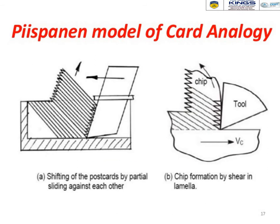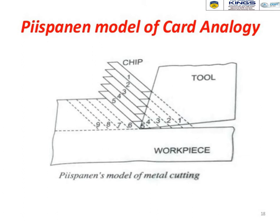The bi-span model of chip formation describes the shifting of chip segments sliding against each other. The chip moves in a direction perpendicular to the tool movement — if the tool moves horizontally, the chip moves vertically. The chip direction is directly perpendicular to the tool movement. In the diagram, numbered points one through four represent chip segments, confirming that the chip direction is perpendicular to tool movement — that is the bi-span model.